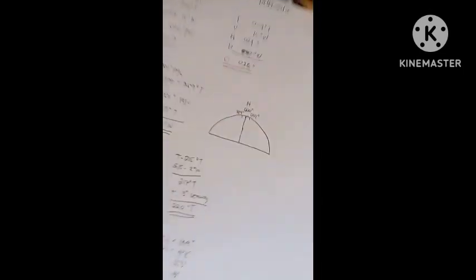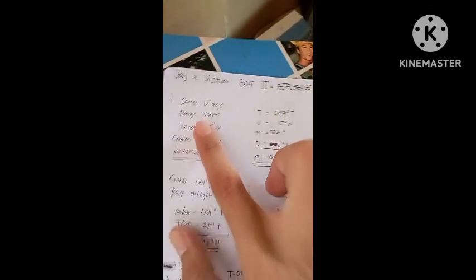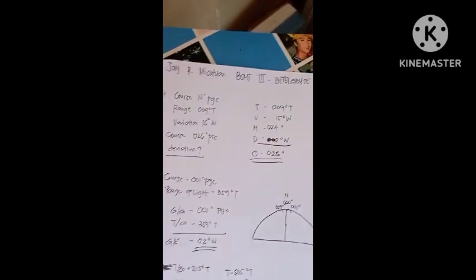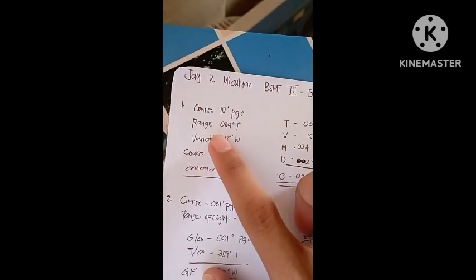Good morning, Sir Selva. I am Jeremy Gutuan from Section B73 Betelgeuse. In this video I'm going to explain my answer about the exercise. First, this is number one.